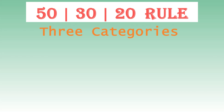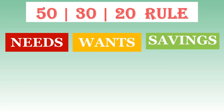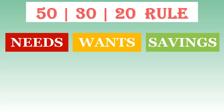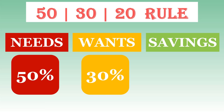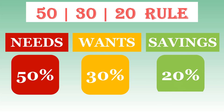The 50-30-20 rule of thumb teaches you to allocate your after-tax income according to three categories: your needs, wants, and savings. With 50% of your income allocated to your needs, 30% allocated to your wants, and 20% allocated to saving and debt. Let's look at these three categories in detail.